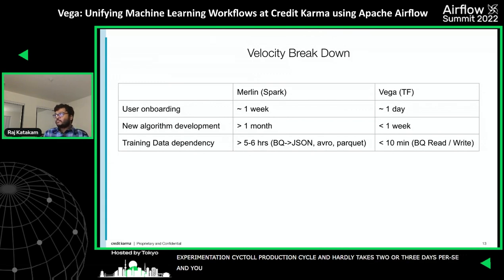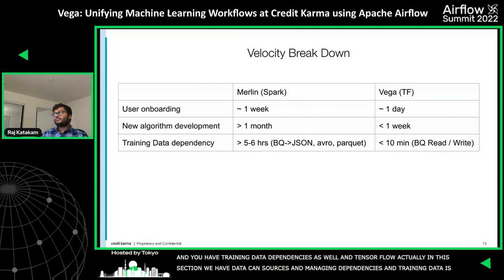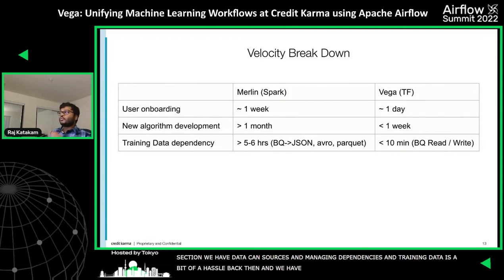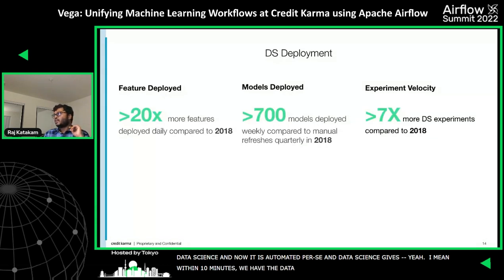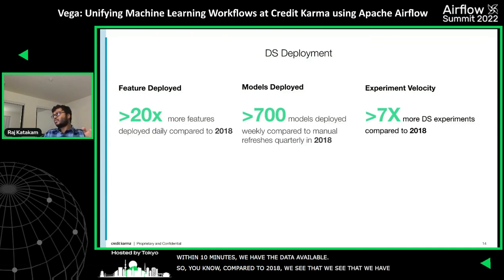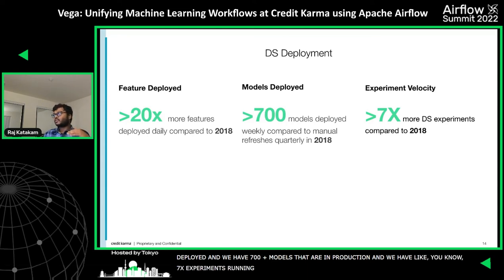You have training data dependencies as well — thanks to Airflow in this particular section, because we have a plethora of data sources and managing the dependencies between each individual piece to make training data was a bit of a hassle. It used to take many hours to get one snapshot of training data for data science. But now it's all automated — within 10 minutes we have the data available. Compared to 2018, we see that we have 20X more features deployed, 700-plus models deployed in production, and 7X more experiments running altogether live in our ecosystem.